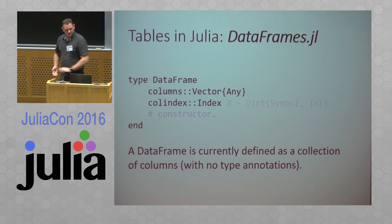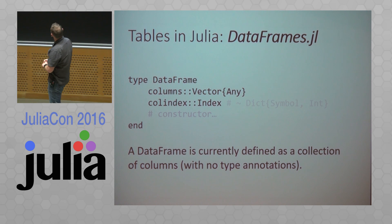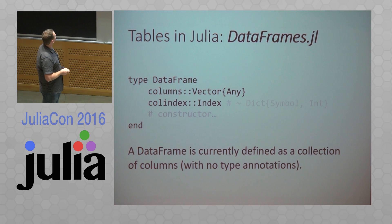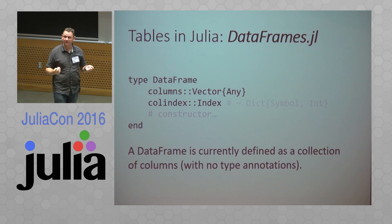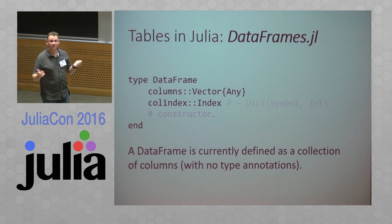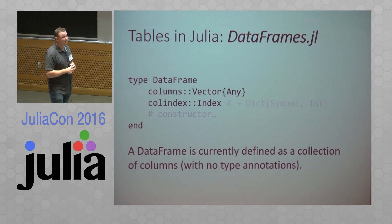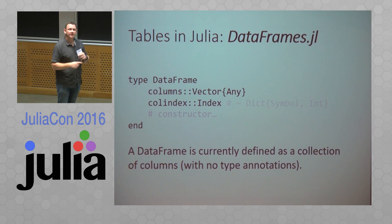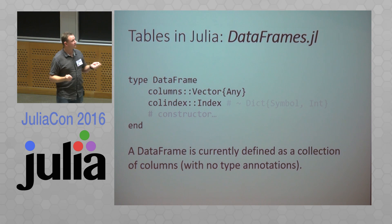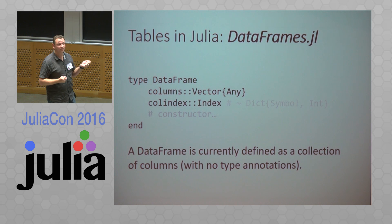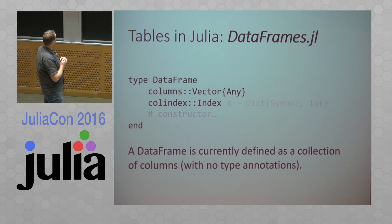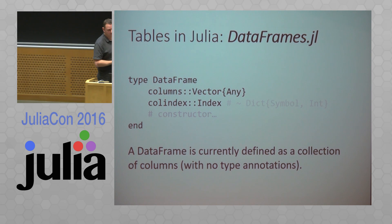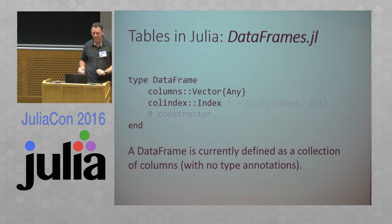As we saw, the DataFrame definition more or less stores columns as a vector of vectors, or some storage type like DataArrays, and some index which helps you map the symbol name to which column number of that vector it is. But the thing here is there's an 'any' type — you just don't know what type is coming out when you try and extract things from that vector.